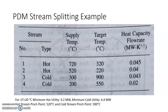Hot stream 1 runs from 720 to 320°C with heat capacity flow rate 0.045. Hot stream 2 runs from 520 to 220°C with heat capacity flow rate 0.04. Cold stream 3 goes from 300 to 900°C with 0.04 heat capacity flow rate, and cold stream 4 goes from 200 to 550°C with 0.02 heat capacity flow rate.